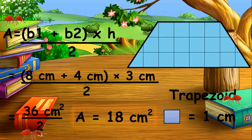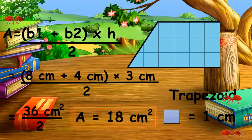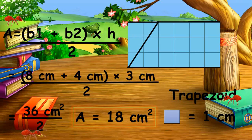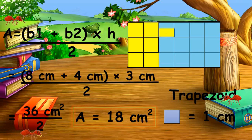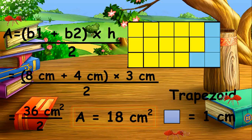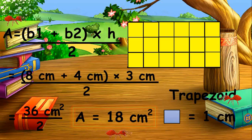To verify, we make the trapezoid a rectangle by transferring the small right triangle portion to the right side. We can now count the square units clearly: 1, 2, 3, 4, 5, 6, 7, 8, 9, 10, 11, 12, 13, 14, 15, 16, 17, and 18. Our answer is correct — there are 18 square centimeters in the trapezoid.